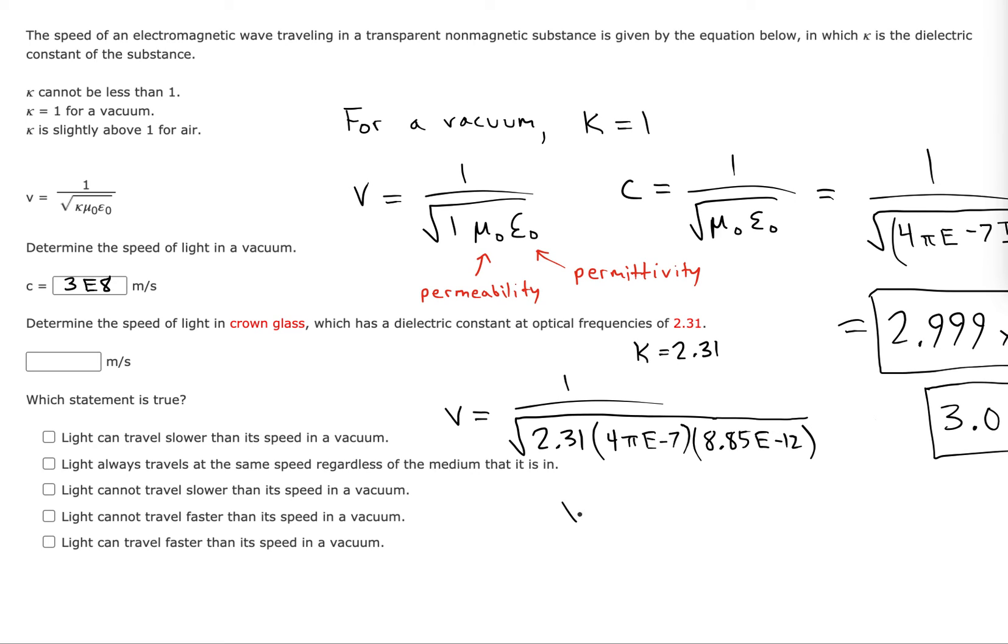From that, I'm getting about 1.97 times 10 to the eighth meters per second. As you can see, it definitely slowed the speed of light down substantially.